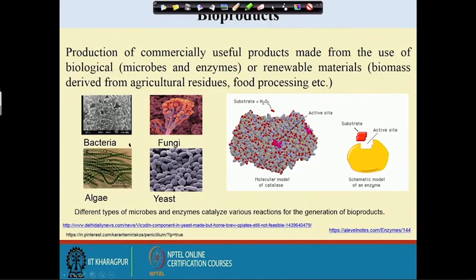Living organisms used include bacteria, algae, fungi, and yeast, which are largely used for the formation of different useful products. Enzymes are also important — for example, catalase enzyme is mostly present in aerobic organisms.